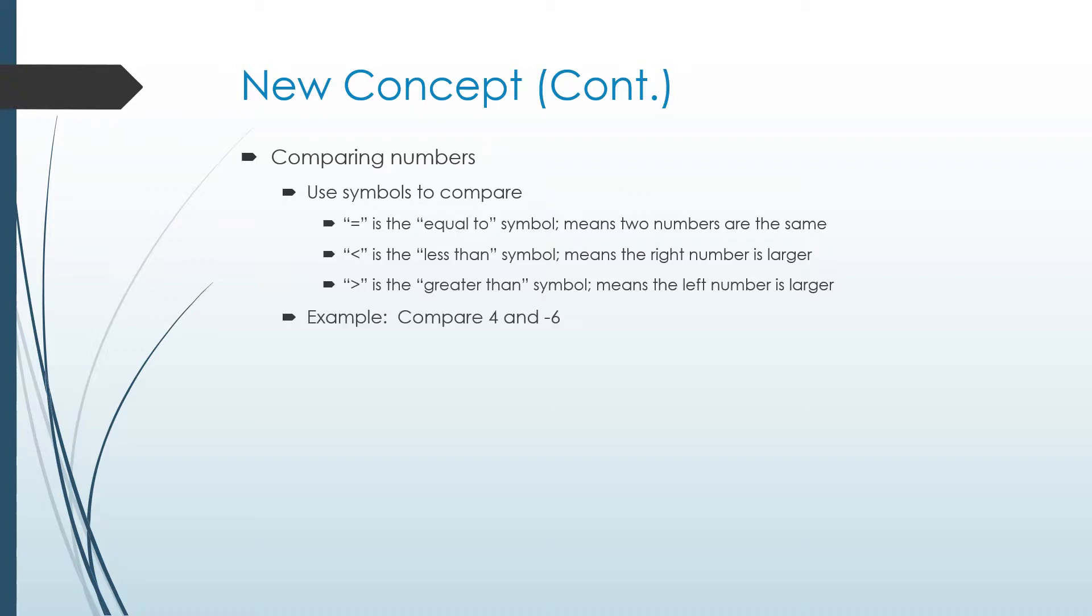So here's an example. If we were comparing four and negative six, positive numbers are always larger than negative numbers. It doesn't matter what the two numbers are. So the answer would be four is greater than negative six. And that's how you would read that. Four is greater than negative six.